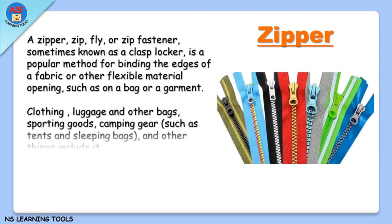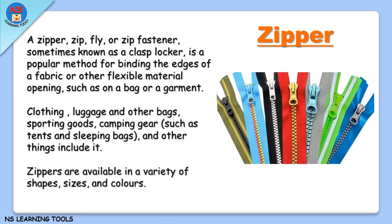Zipper. A zipper, zip fly, or zip fastener, sometimes known as a clasp locker, is a popular method for binding the edges of a fabric or other flexible material opening, such as on a bag or a garment. It is found in clothing, luggage, bags, sporting goods, camping gear such as tents and sleeping bags. Zippers are available in a variety of shapes, sizes, and colors.